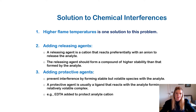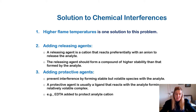The solutions to resolving chemical interferences: the first is higher flame temperatures — use a higher flame temperature than previously used. Adding releasing agents is more commonly used. A releasing agent is a cation that reacts preferentially with an anion to release the analyte. The releasing agent should form a compound of higher stability than that formed by the analyte. Adding protective agents prevents interference by forming stable but volatile species with the analyte — a protective agent is usually a ligand that reacts with the analyte, forming a relatively volatile complex.